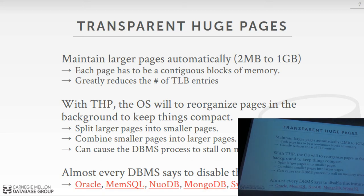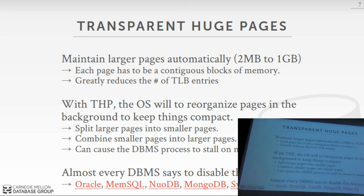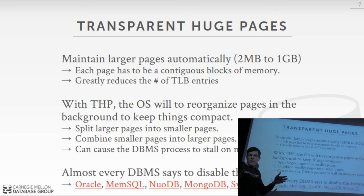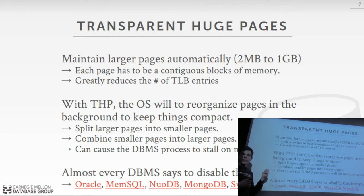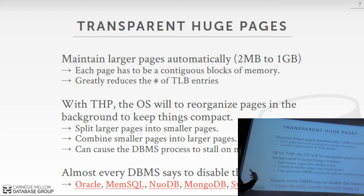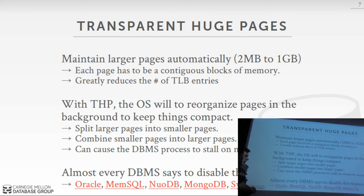The advantage is significant — going from 4 KB to 2 MB pages dramatically reduces TLB entries — but in general this doesn't work out. In Linux 4.6 they added an option where if you try to allocate with a huge page and can't find a contiguous block, it can defer the operation and use a smaller page, reorganizing later — but you still pay the stall if you hit it during that window. So almost every database — not just in-memory databases — recommends in their documentation to disable Transparent Huge Pages.